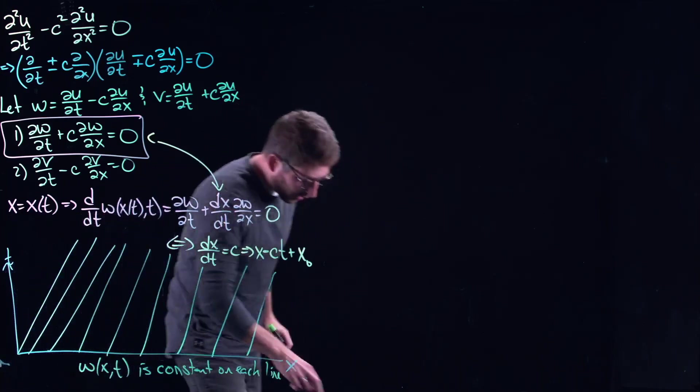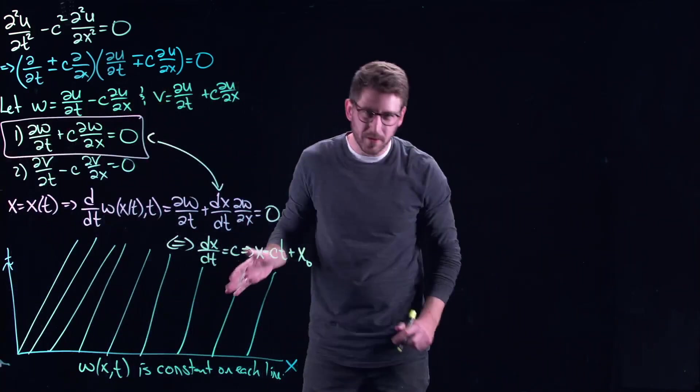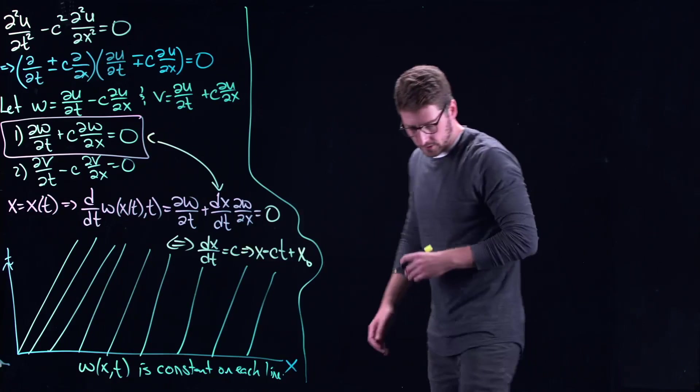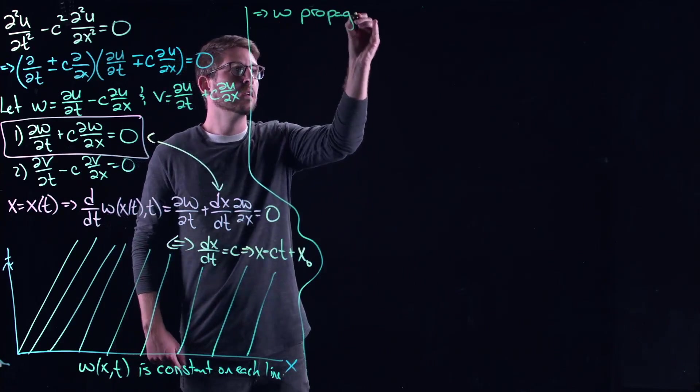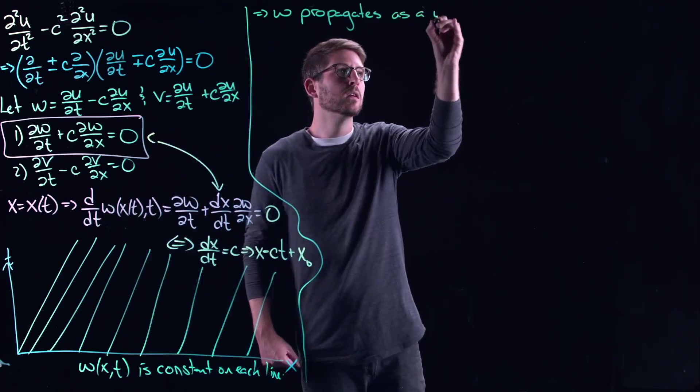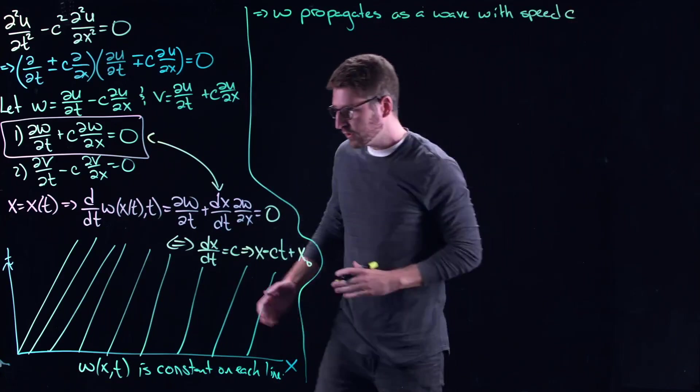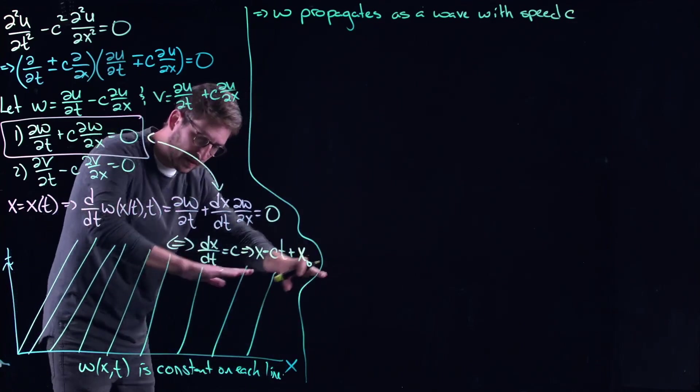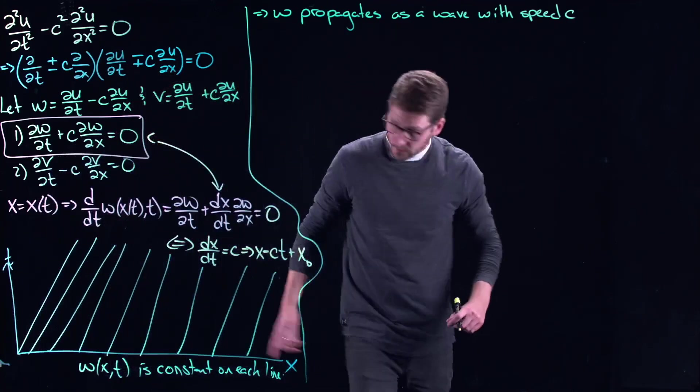Each one of these lines are called a characteristic. These are a family of parallel characteristics. I know my picture is not very parallel, that's okay. You're an experienced mathematician watching this video. You know what I'm trying to do here. And essentially what this tells you is that w propagates as a wave with speed c. So essentially if you start with an initial profile at time zero, all that thing is doing is being pushed up and to the right, for example if c is positive. So it's just going like this, up and to the right through space and time.